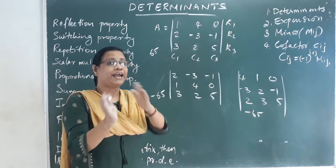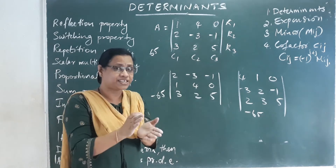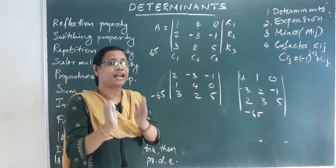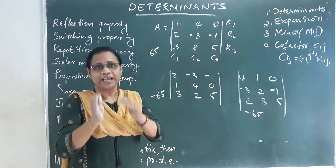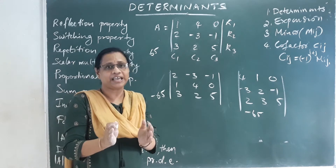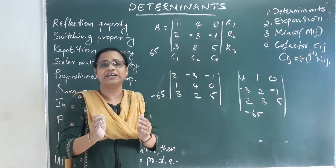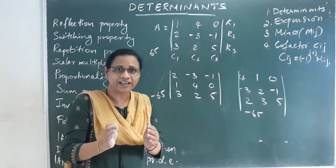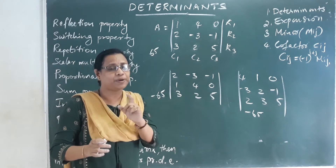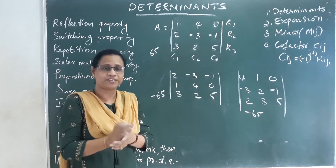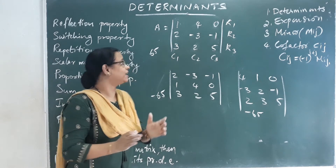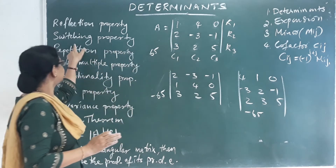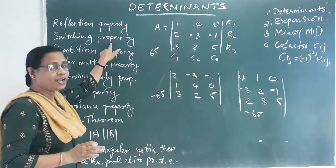The difference between adjacent rows and adjacent columns is that switching them changes the sign of the determinant value. That is the switching property.